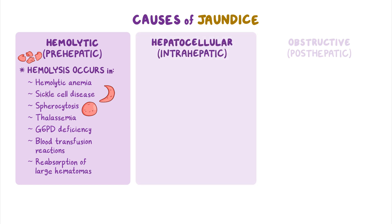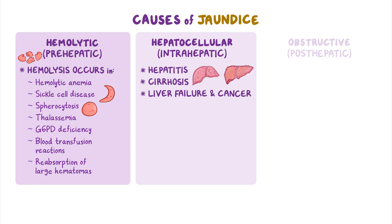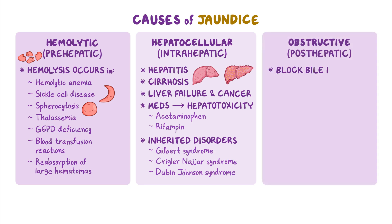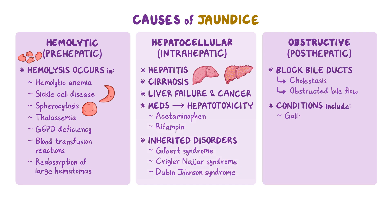Hepatocellular jaundice can be caused by conditions that damage the liver, such as hepatitis, cirrhosis, liver failure, or liver cancer, and certain medications that may cause hepatotoxicity, such as acetaminophen or rifampin, as well as inherited disorders that affect liver function, such as Gilbert syndrome, Crigler-Najjar syndrome, or Dubin-Johnson syndrome. Lastly, obstructive jaundice is caused by conditions that block the bile ducts, causing cholestasis or obstructive bile flow. These conditions include gallstones, pancreatitis, and pancreatic cancer, as well as congenital defects and pregnancy.